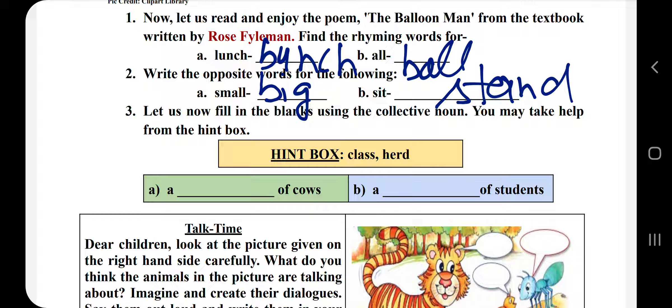A dash of cows, what do we say about samuh? A dash of students. What do we say about students' group? What do we say about herd? H-E-R-D, herd. A herd of cows. And the students' group, we call class. A class of students.